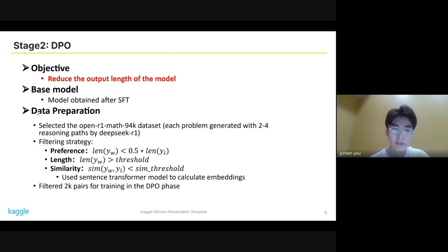In the data preparation stage, we selected the OpenR1 Math dataset. In this dataset, each problem was generated with 2 to 4 reasoning paths by DeepSeek R1. We used three criteria to filter the DPO pairs, where y_longer represents the chosen response and y_rejected represents the rejected response.